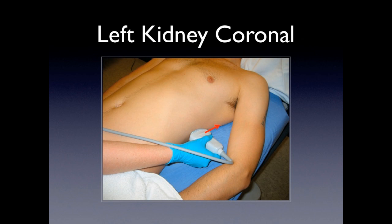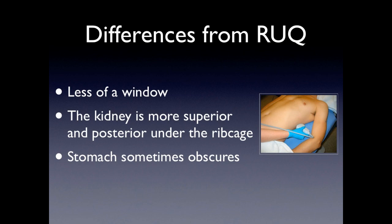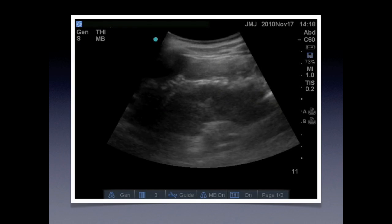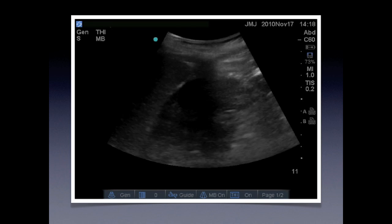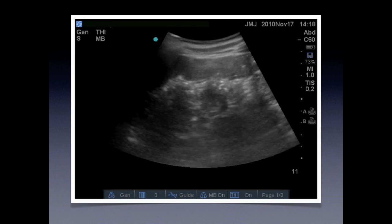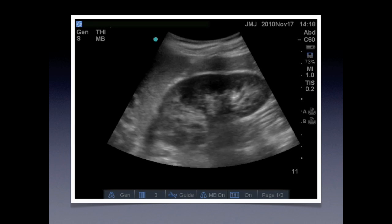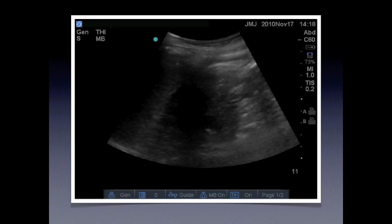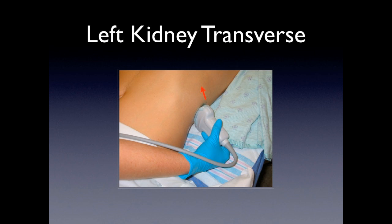Now let's switch sides. For the left kidney coronal view, the indicator is towards the head. The difference here is that you have less of a window because the kidney is more superior and hiding behind the ribcage, and sometimes the stomach may obscure the view. You should see the spleen on the left side of your screen and the kidney.